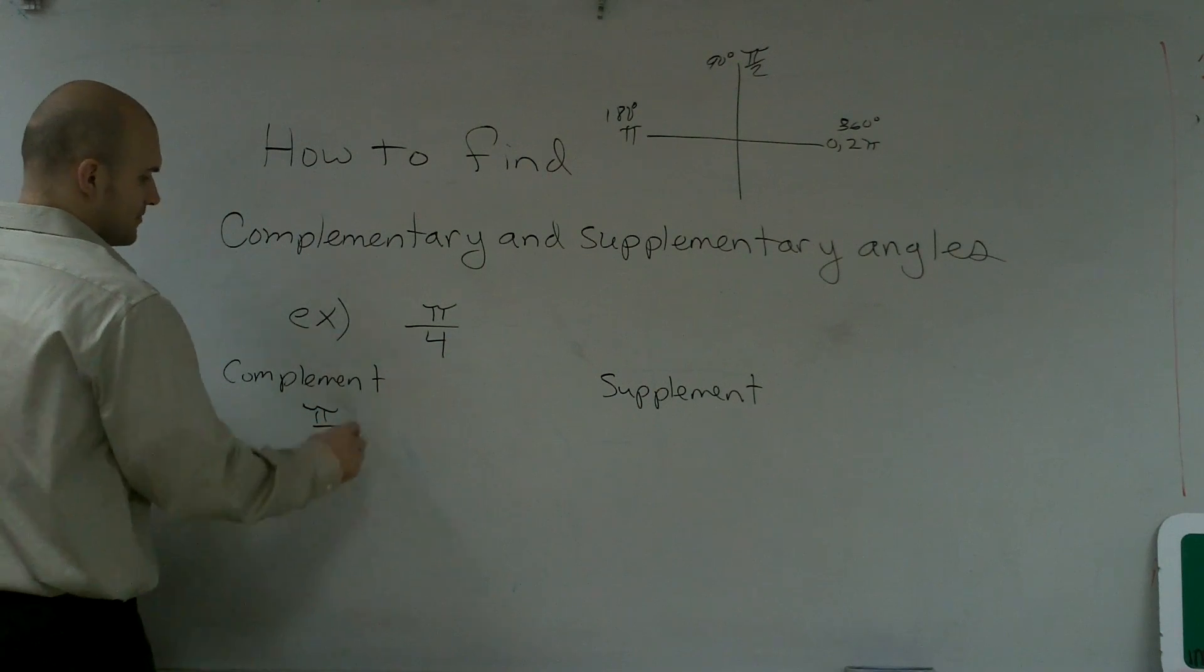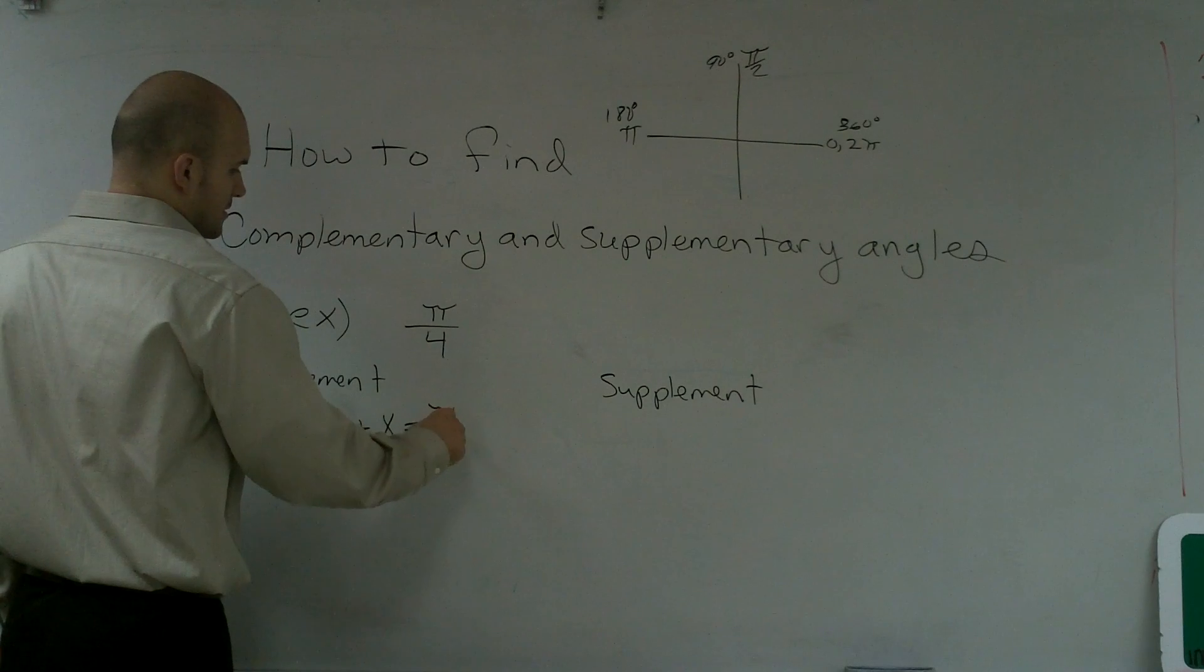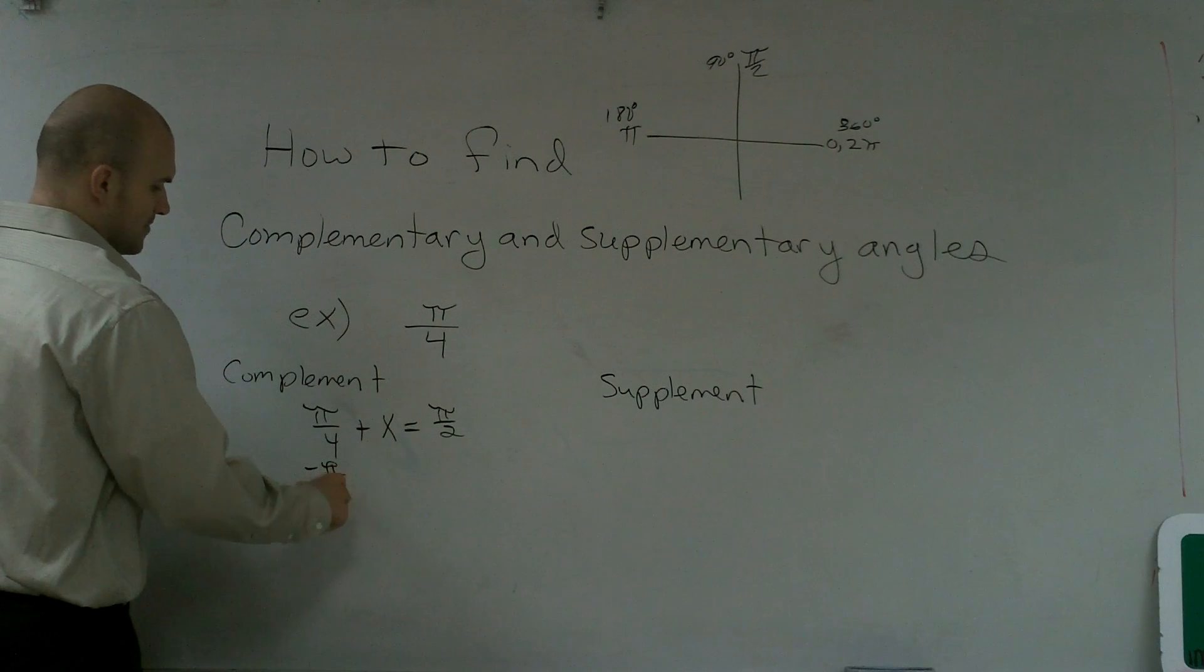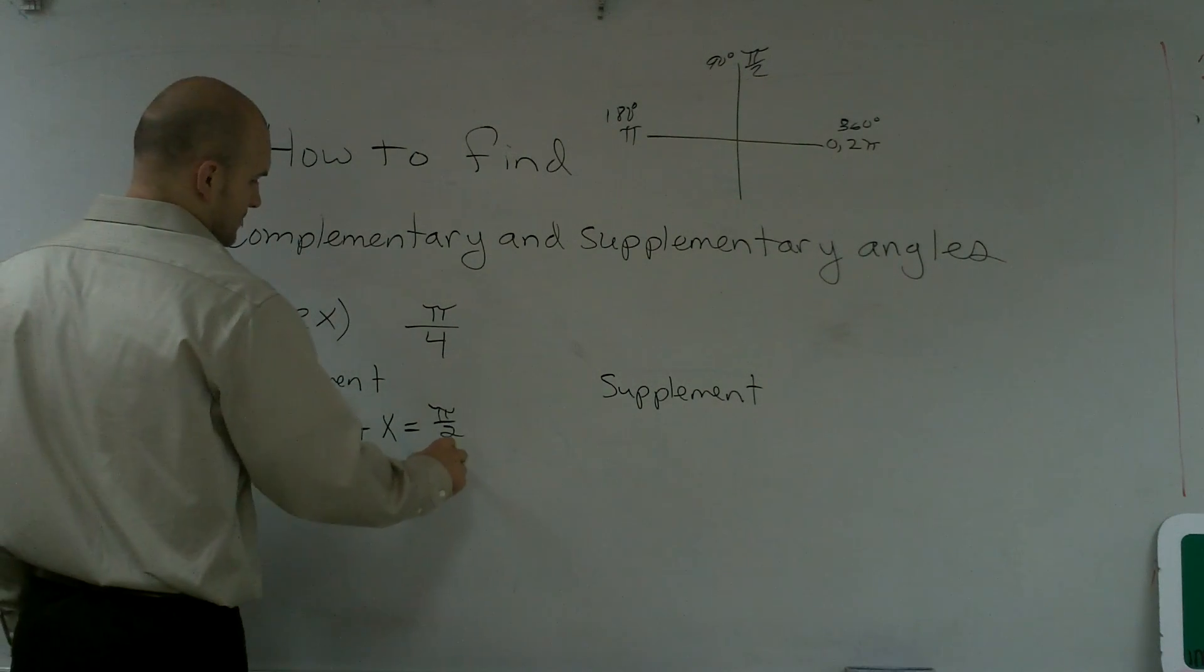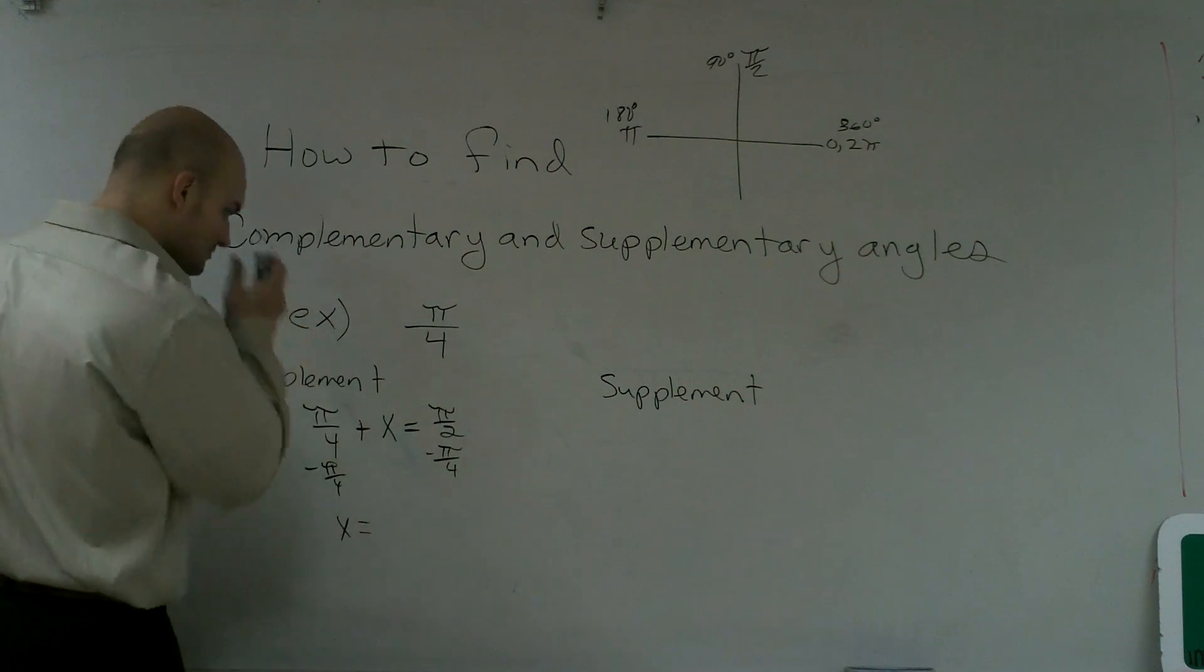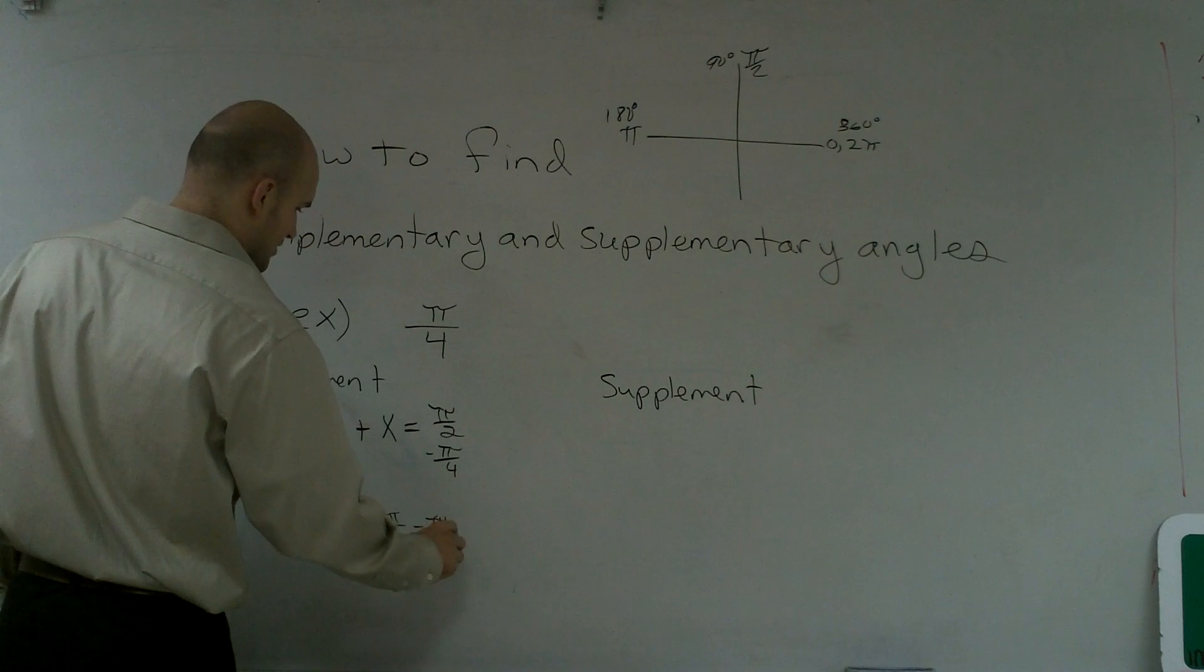So, π over 4 plus x equals π over 2, which we look at this and we say, all right, subtract π over 4 on both sides. Therefore, we get x equals π over 2 minus π over 4.